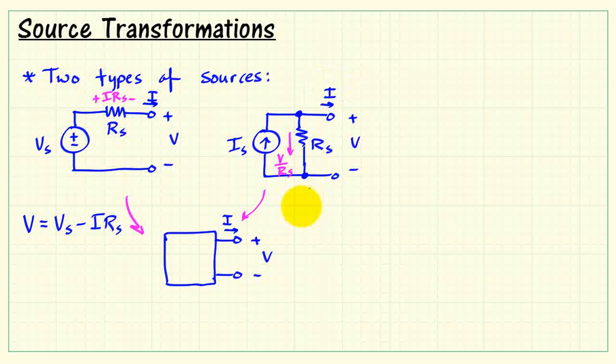And on this side, we can write an expression for I by applying Kirchhoff's current law, or KCL. We have I equals I S minus V divided by R sub S.